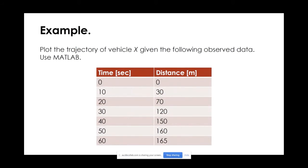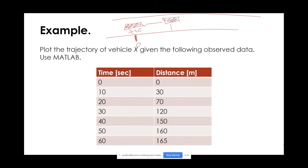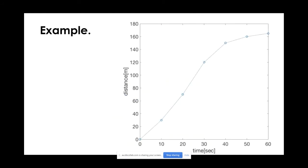Let's look at an example where we plot the trajectory of vehicle X given observed data. Imagine we collect data from a single vehicle, measuring the distance traveled every 10 seconds. At time t equals 0, the vehicle is at distance 0. 10 seconds later, the vehicle is at 30 meters. At t equals 20 seconds, the vehicle is at 70 meters, and so on. If you plot this on a time-space diagram, you get the trajectory.